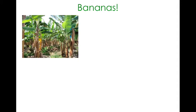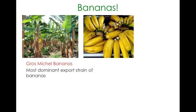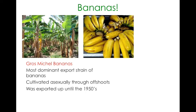I want to talk about bananas, because bananas give us a good understanding of how asexual reproduction works and how it has a particular role of importance in our lives, particularly in livestock and agriculture. This is what a banana tree looks like. These bananas actually have a name — they are called the Gros Michel bananas. They're a little bit smaller than the ones we tend to buy now, but these were the most dominant type of banana being exported all the way up until the 1950s. The way they grew these bananas was to take a cutting or an offshoot from one of these trees and plant it nearby.